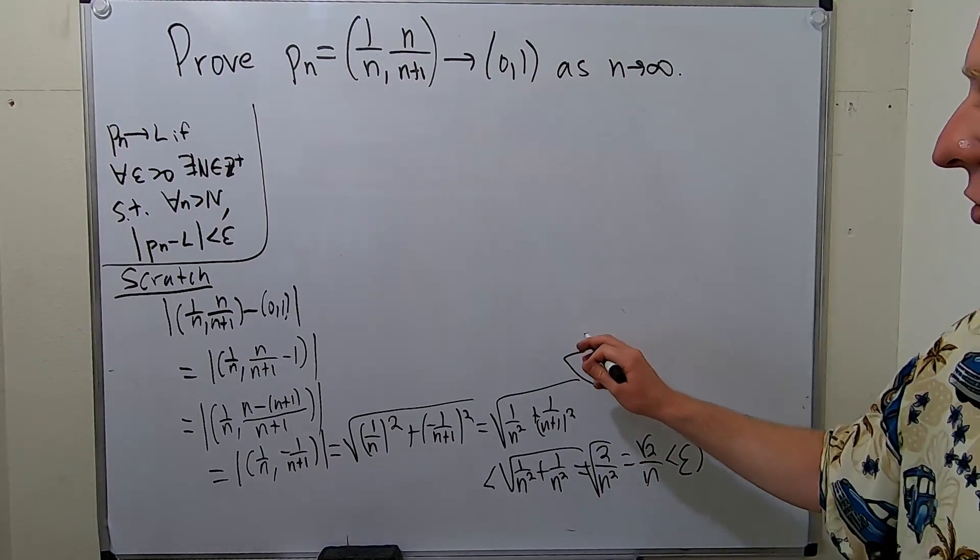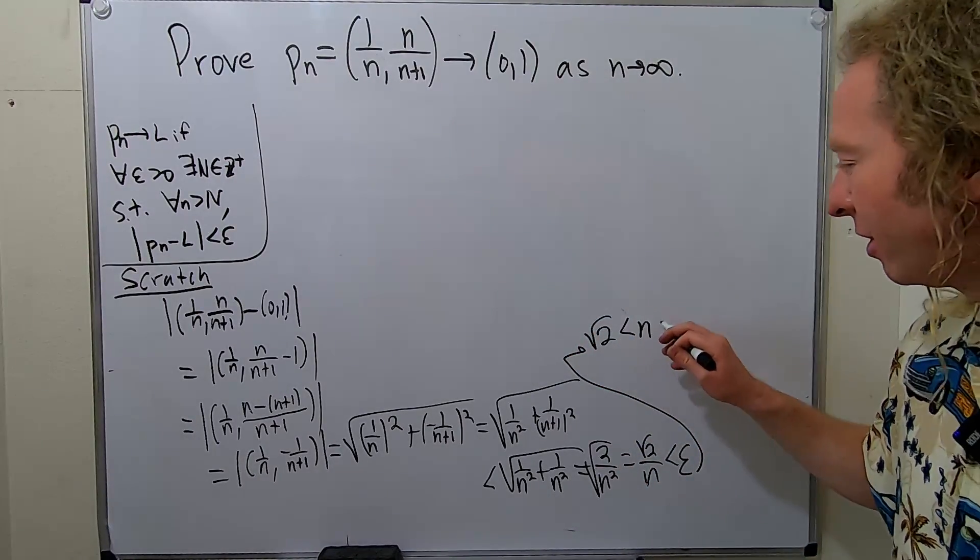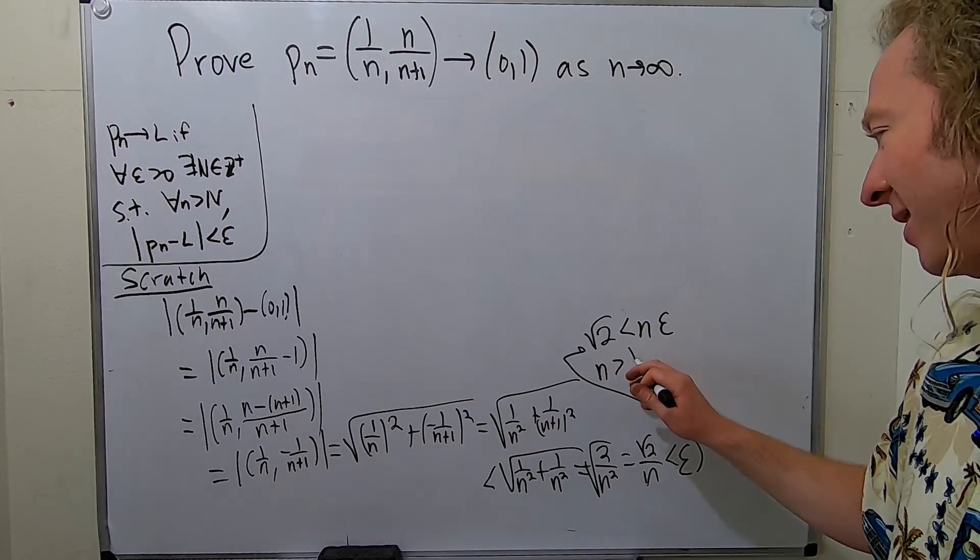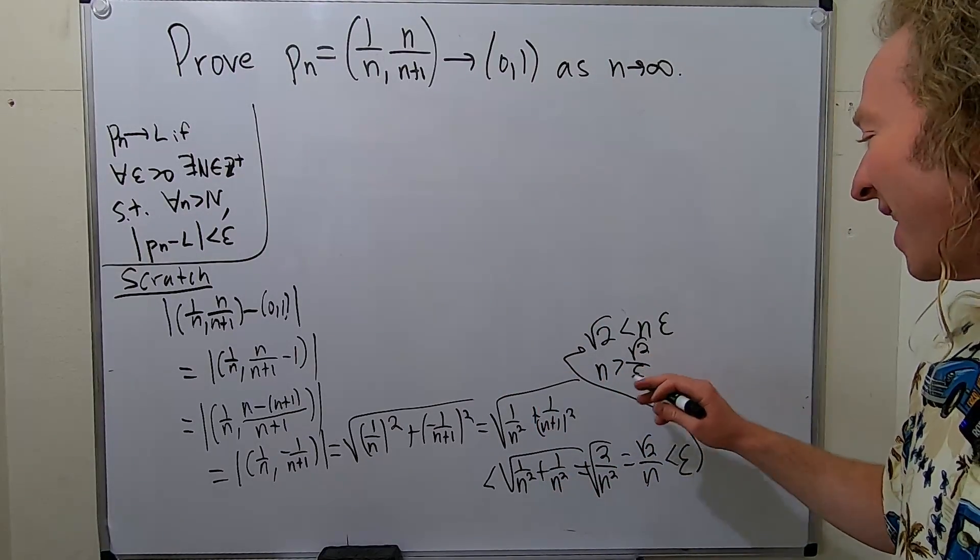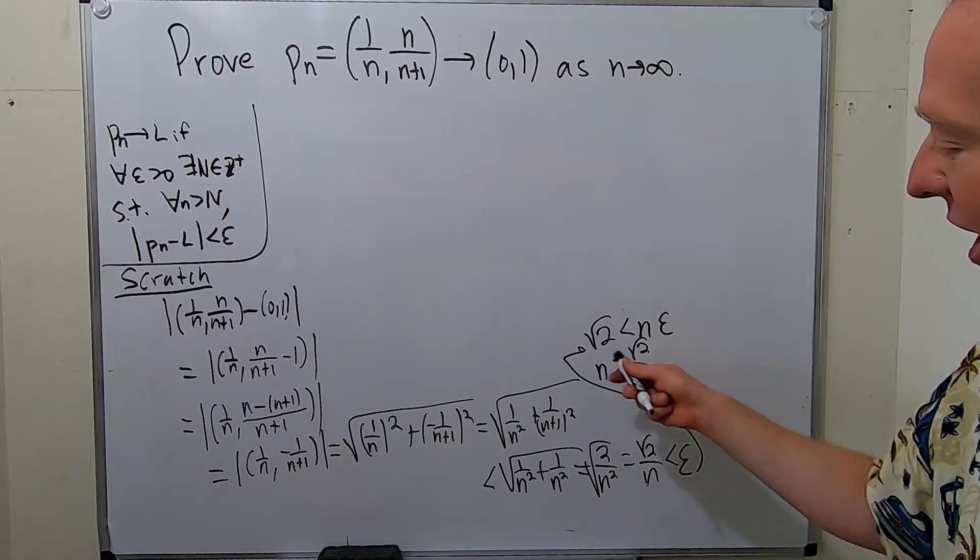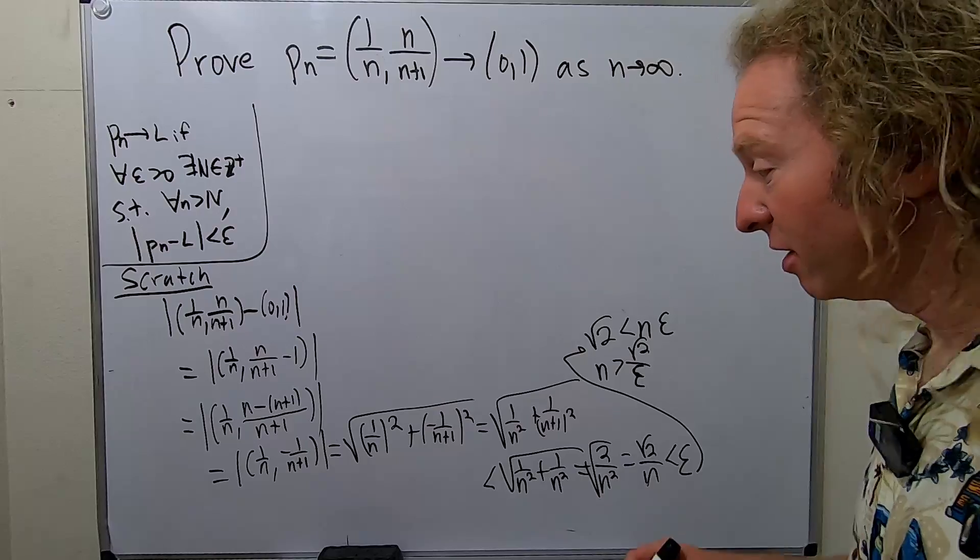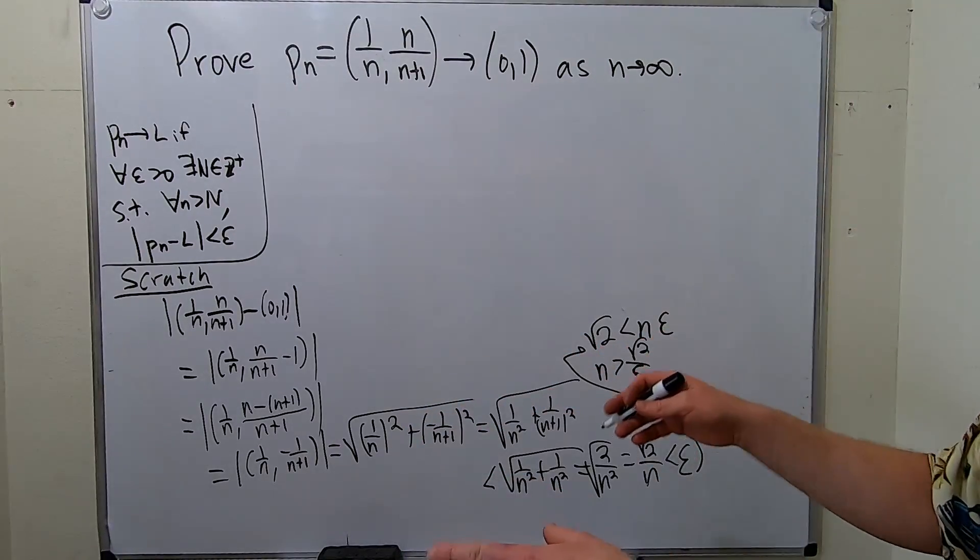Multiply by n. So we get square root of 2 less than n epsilon, divide by epsilon. So n is greater than square root of 2 over epsilon. And that's what we want our N to be. So if we choose an N that's bigger than this, everything in the proof should work out nicely.